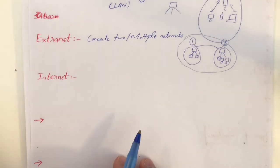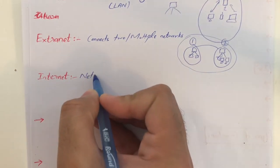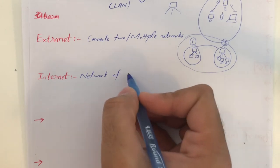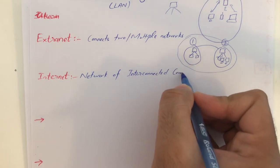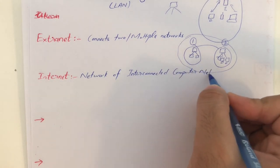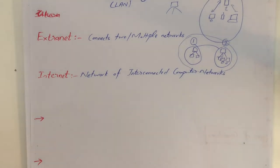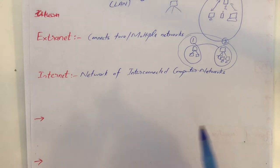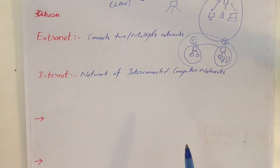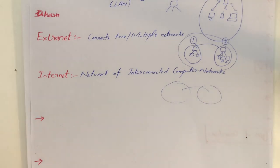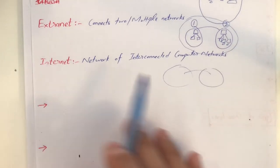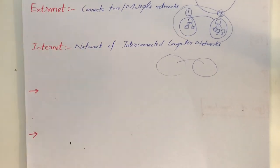So what is internet then? Internet is basically a network of interconnected computer networks. You can say if you connect all extranets across the globe, it will become the internet. The internet is a big network where you have plenty of networks connected with each other and you can access their web pages and all that. Just imagine how big the internet is going to be when you connect all extranets across the globe.